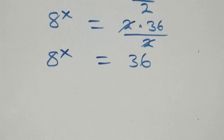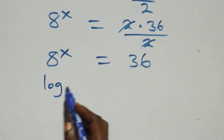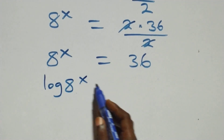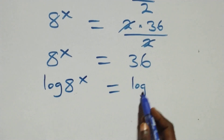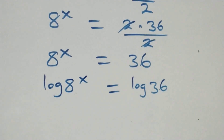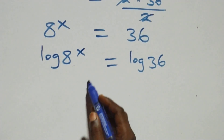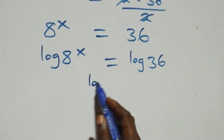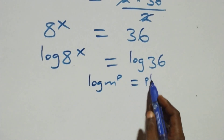Our next step, we take the log on both sides: log of 8 raised to power x equals log 36. We apply the power law — when we have log m raised to power p, this is the same as p log m.